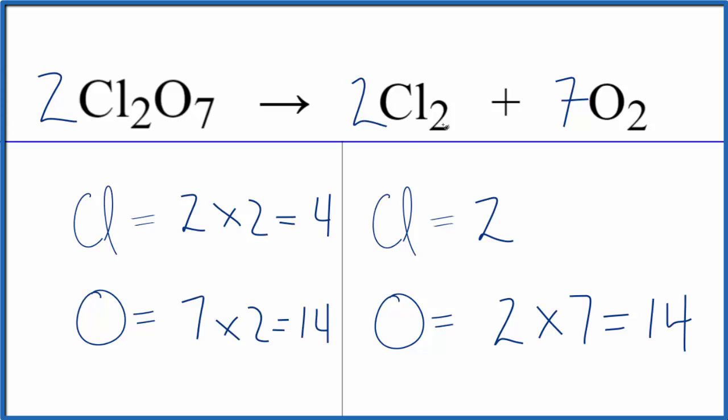then to balance the chlorines, we just put a two here. Two times two, that'll give us four. So this is the balanced equation. That's probably the easiest way to go about balancing this decomposition reaction.